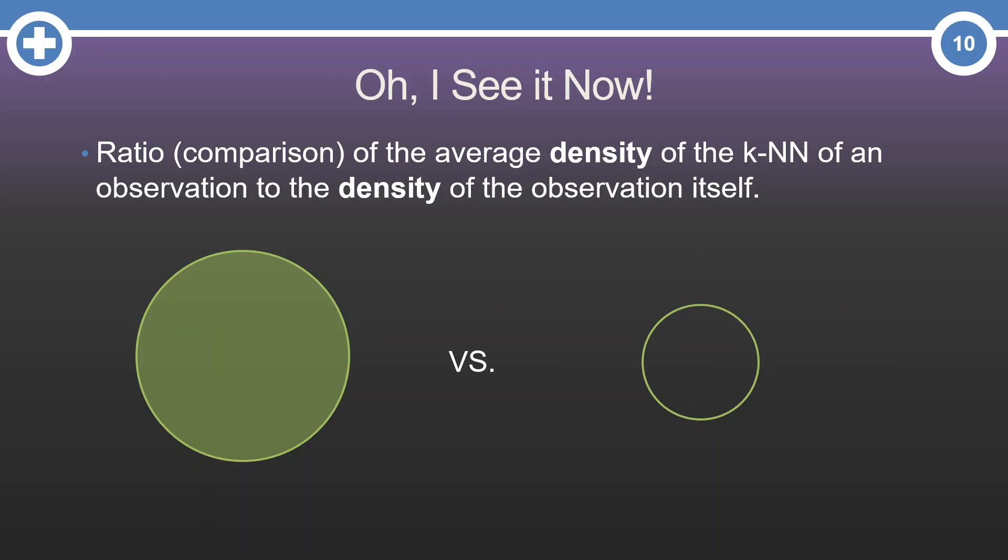Now, let's compare. See how the density of the original point is larger than the average density of its neighbors? It would have a ratio, or a local outlier factor, above 1. Therefore, it is more likely to be a local outlier.